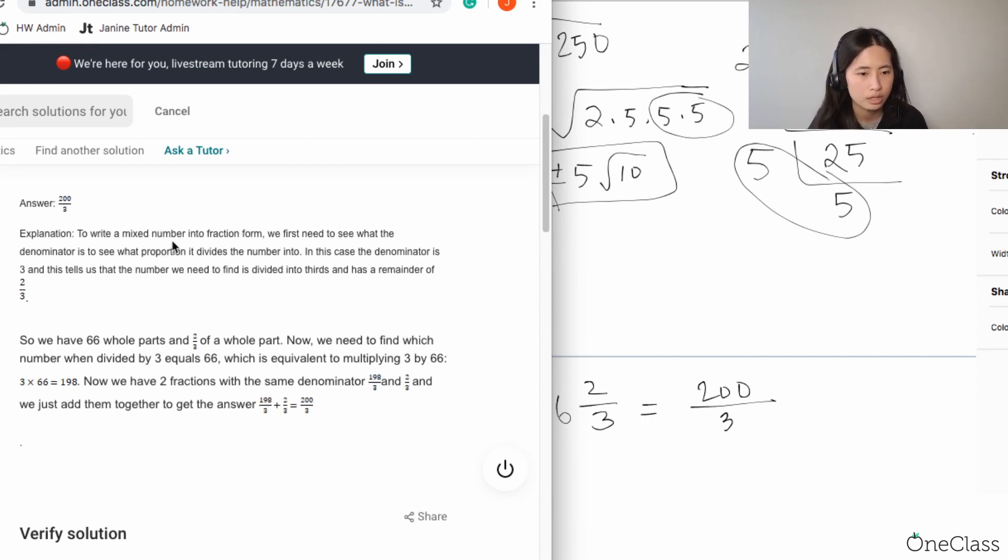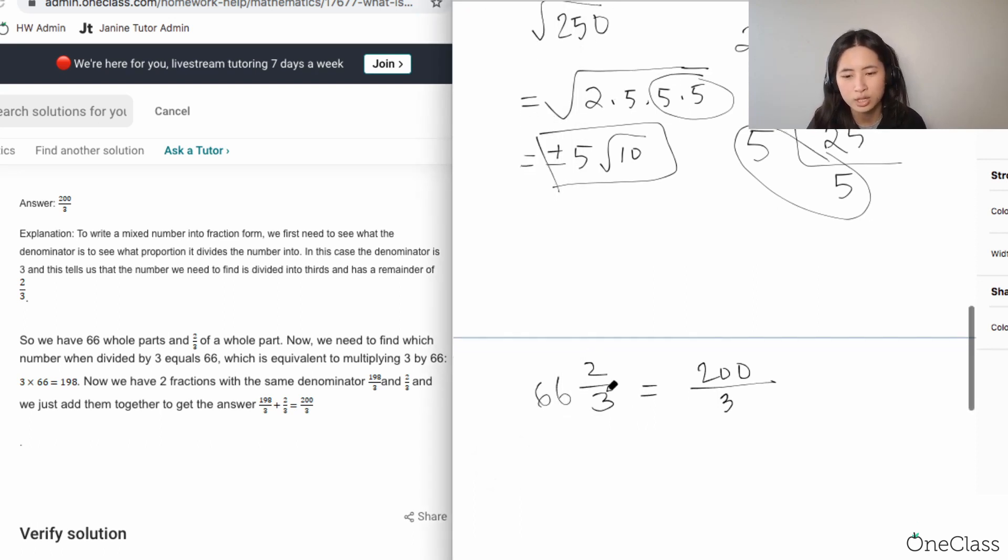Let's see what they wrote. They're saying that to write a mixed number into fraction form, we first need to see what the denominator is to see what proportion it divides the number into. In this case, the denominator is 3, which tells us the number we need to find is divided into thirds and has a remainder of 2 over 3. In my opinion, just multiply this, add this to 2, you get the numerator—simple as that.